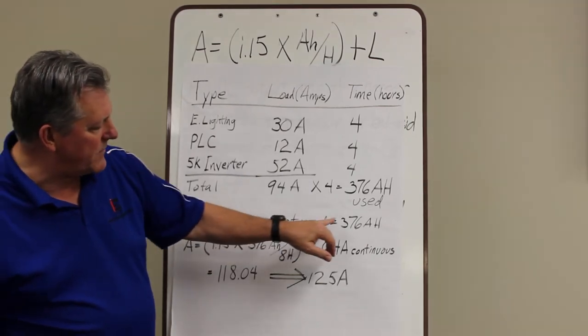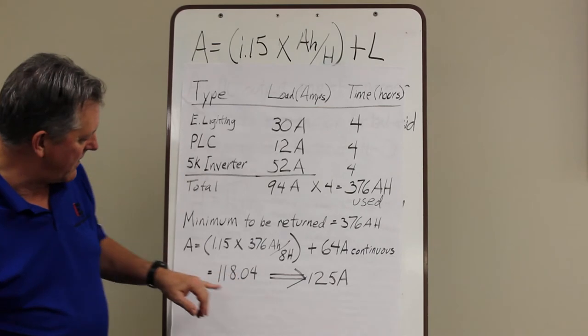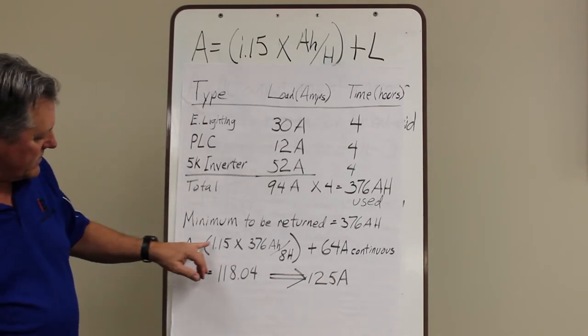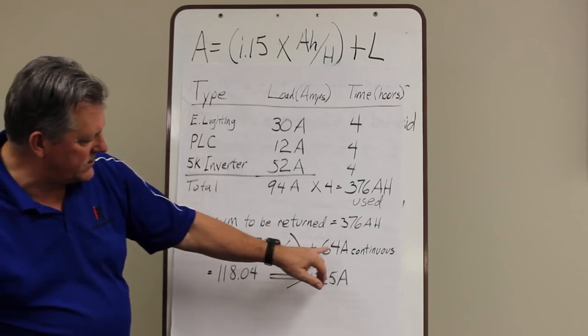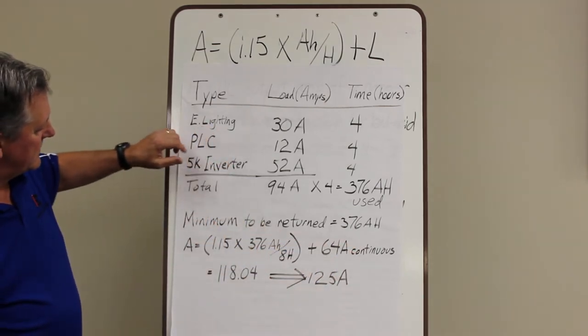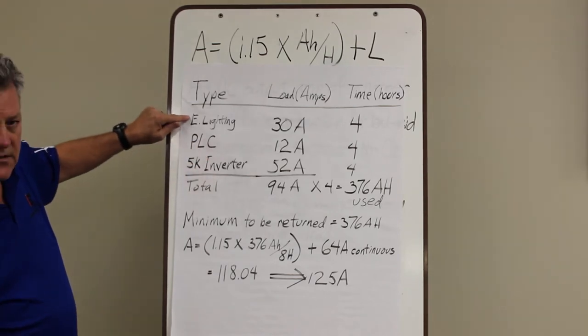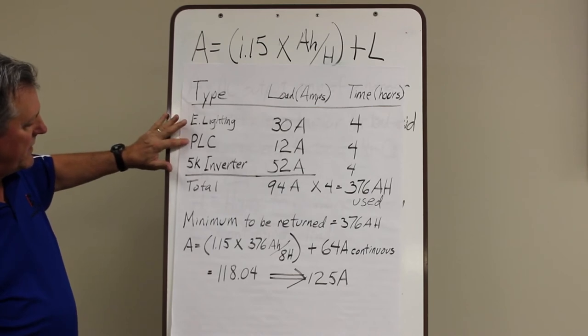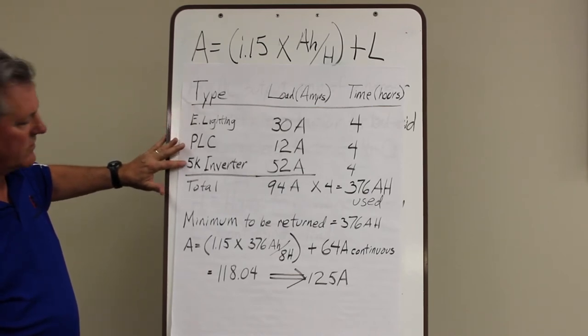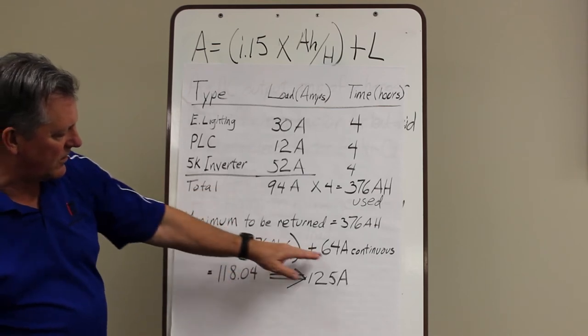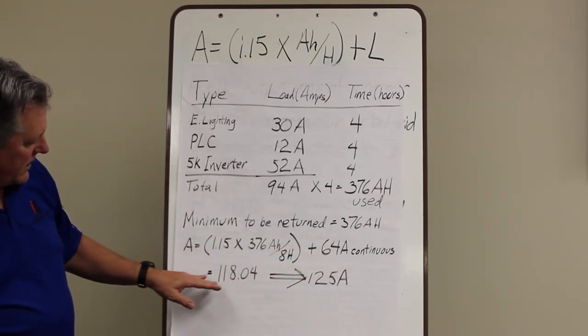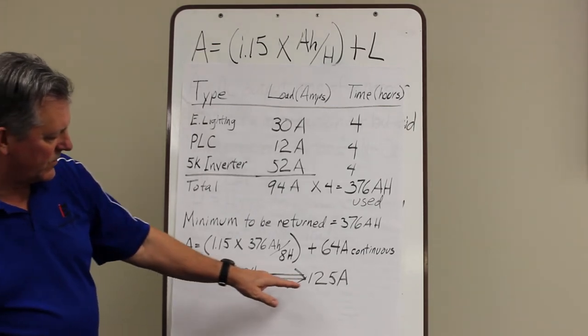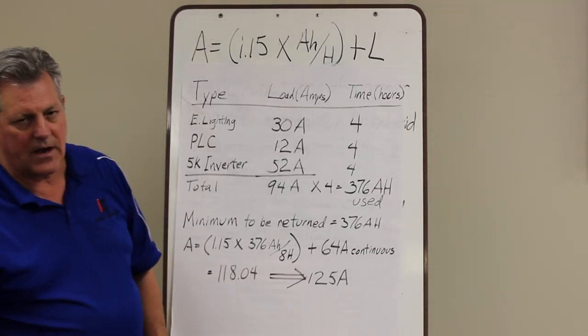So the minimum we have to return to that battery is 376 amp hours. So we take A equals 1.15 times 376 amp hours divided by 8 plus 64 amps continuous load. Now we get the continuous load. The emergency lighting is not being used on a continuous basis. The only thing continuously load would be the PLCs and the 5K inverter. So those together would come up with 64 amps continuous. So we run through that equation we get 118.04 amps which is the next size up is 125 amp charger. It's a pretty simple equation.